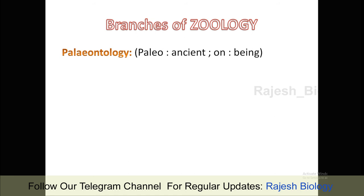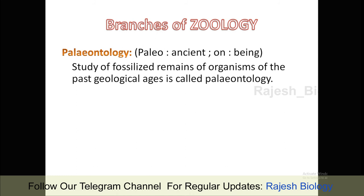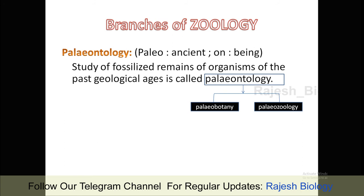Next is paleontology — a very interesting topic. 'Paleo' means ancient, 'on' means being, and 'logos' means study. Paleontology is the study of fossilized remains of organisms of past geological ages. Paleontology has two branches: paleobotany, which deals with fossils of plants, and paleozoology, which deals with fossils of animals.